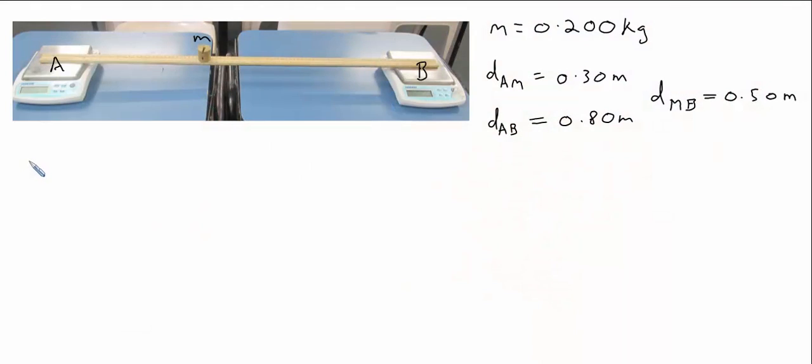Hi class. Today we're going to look at some bridge problems, and to start off with I've got a problem shown here. We have support A, support B, and a mass that is 0.3 meters from the edge of support A, 0.5 meters from the edge of support B, and the mass is 200 grams which is 0.200 kilograms.